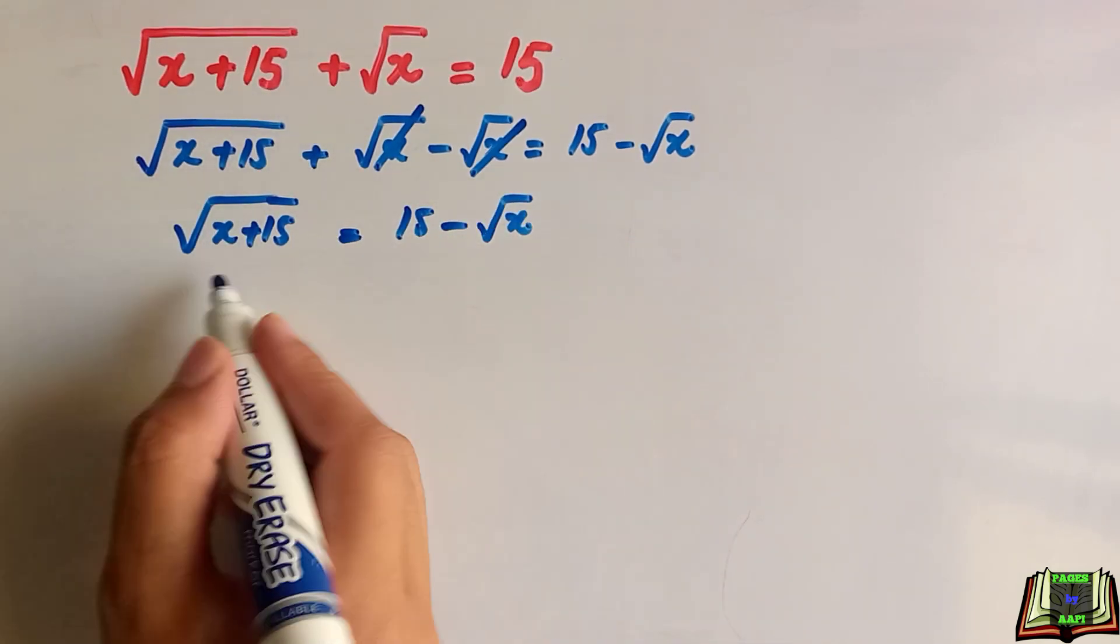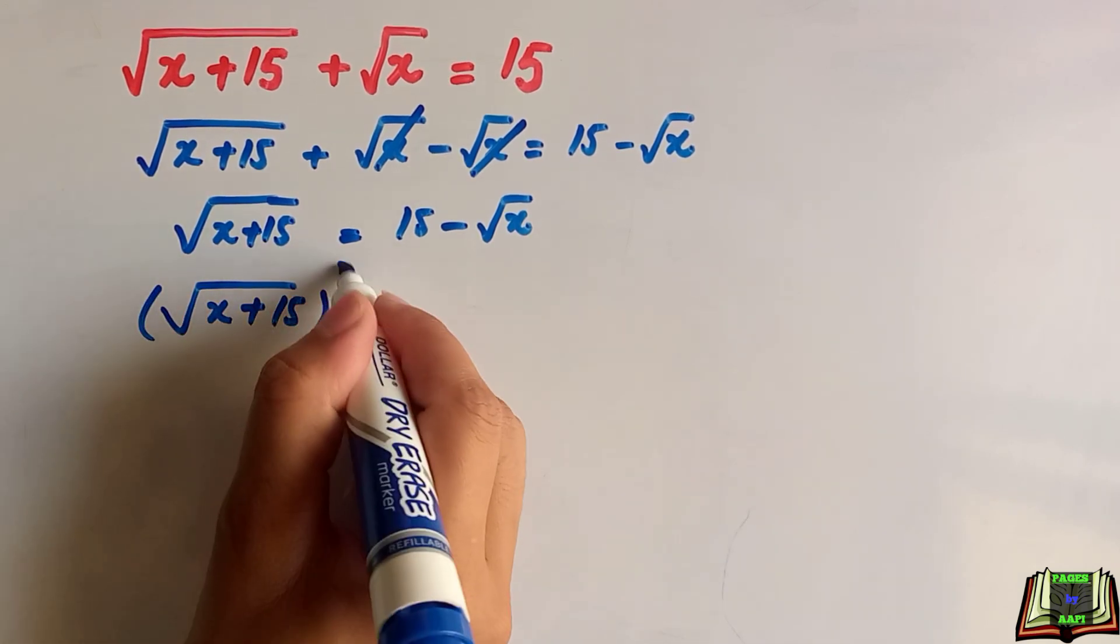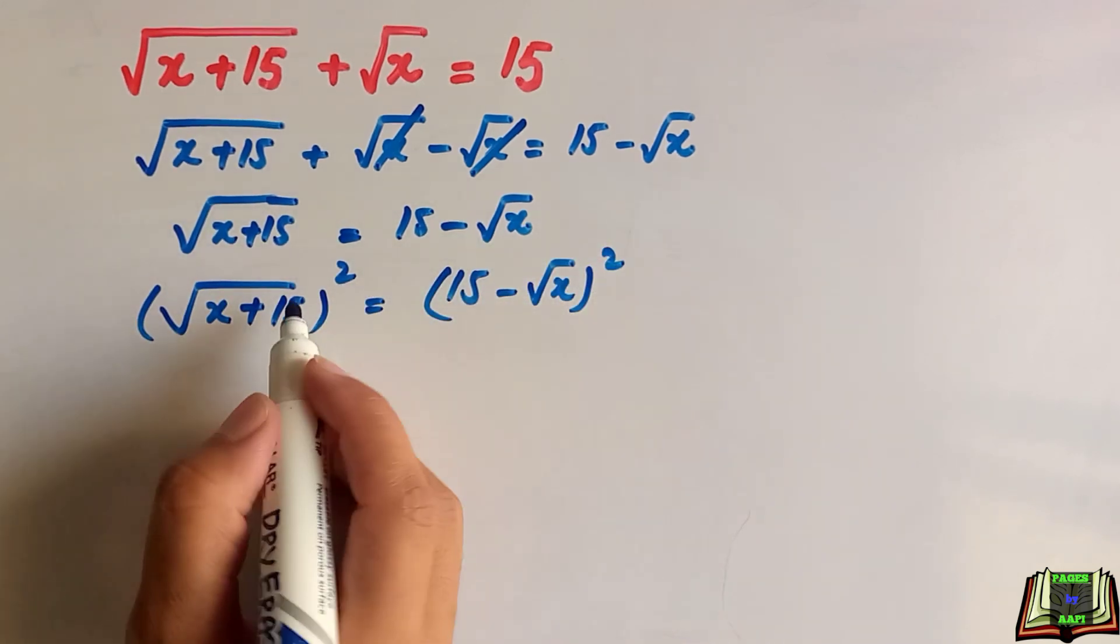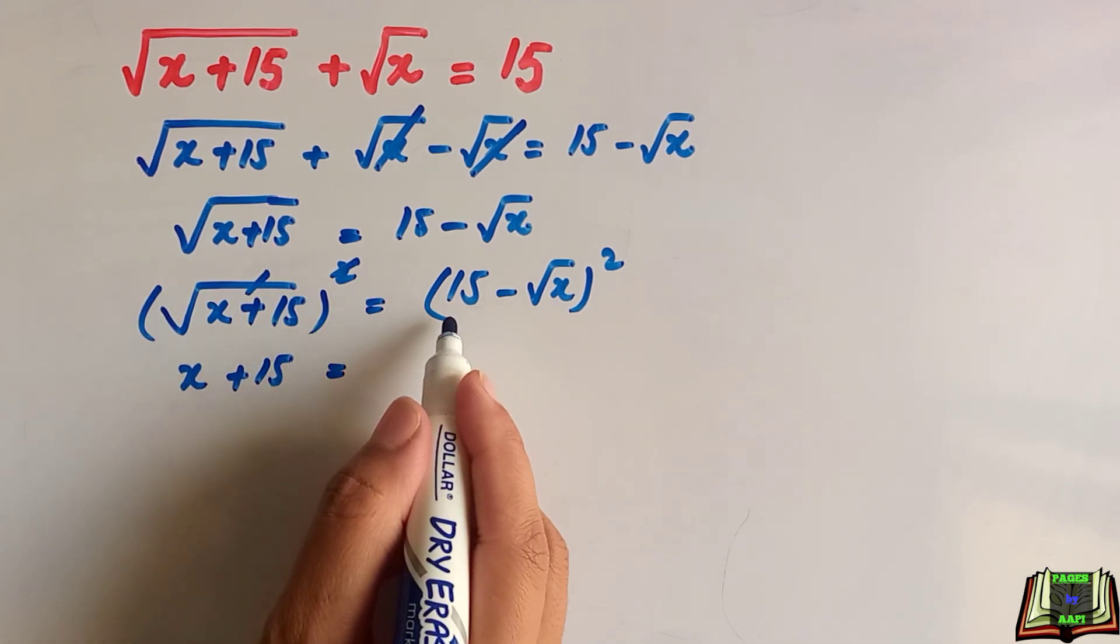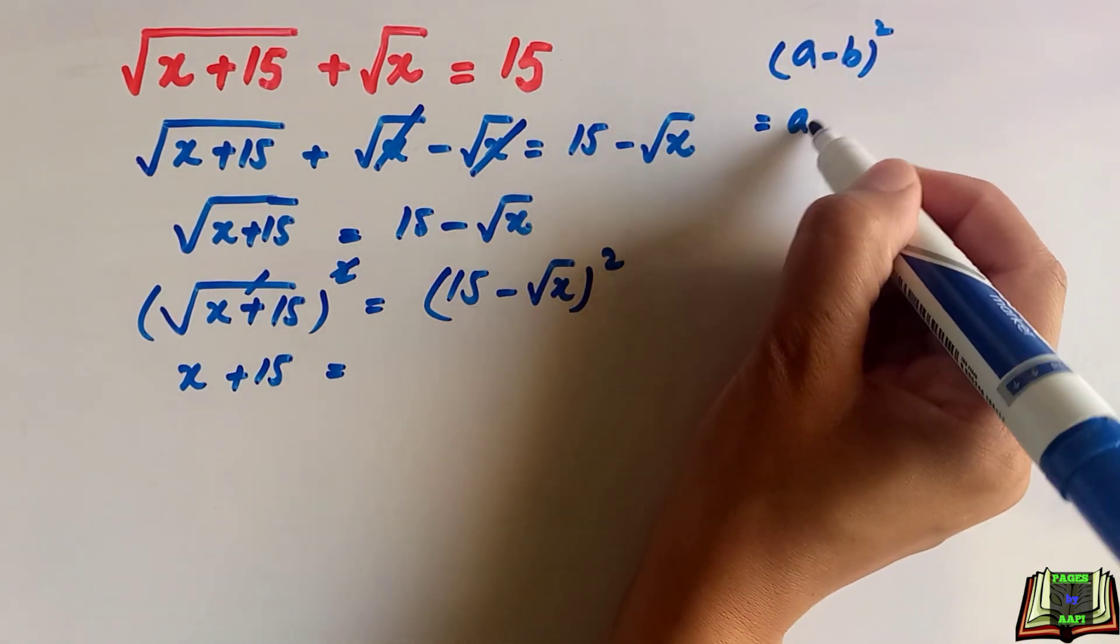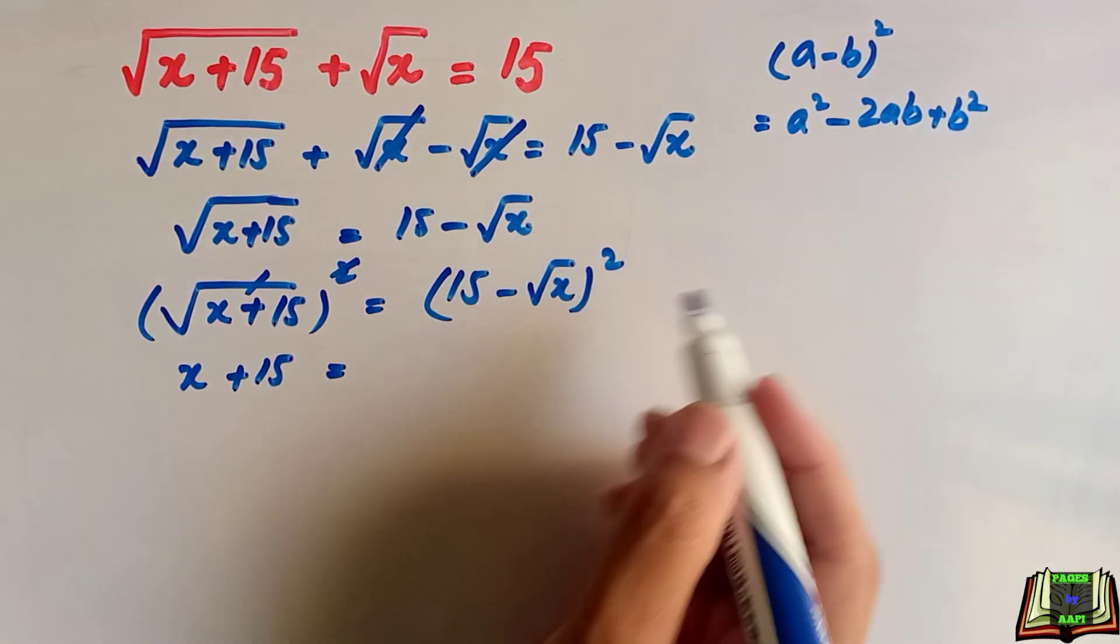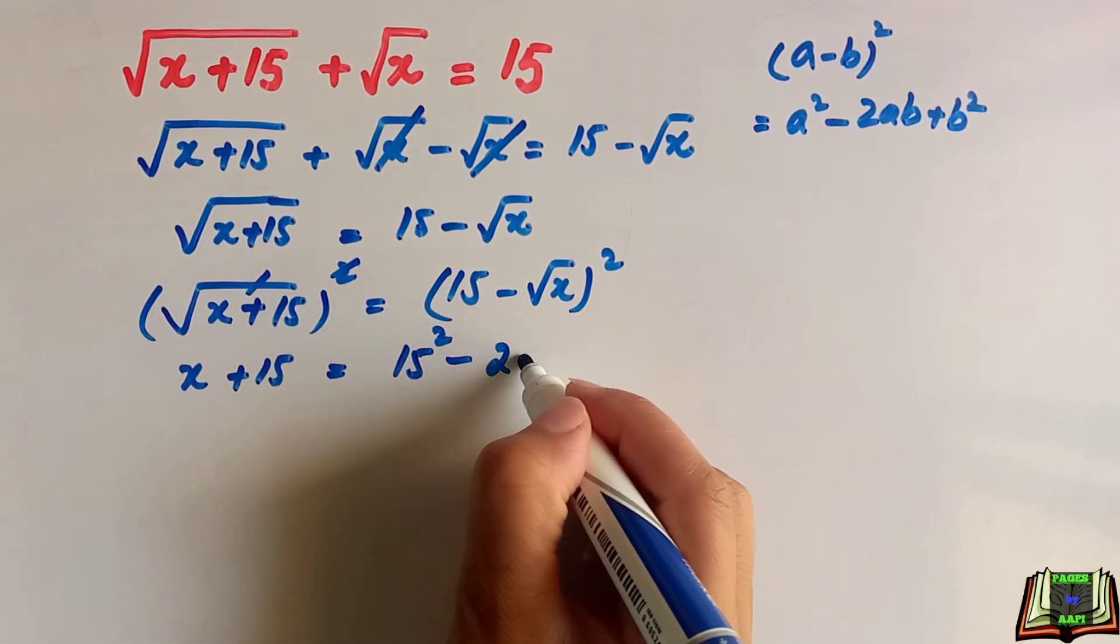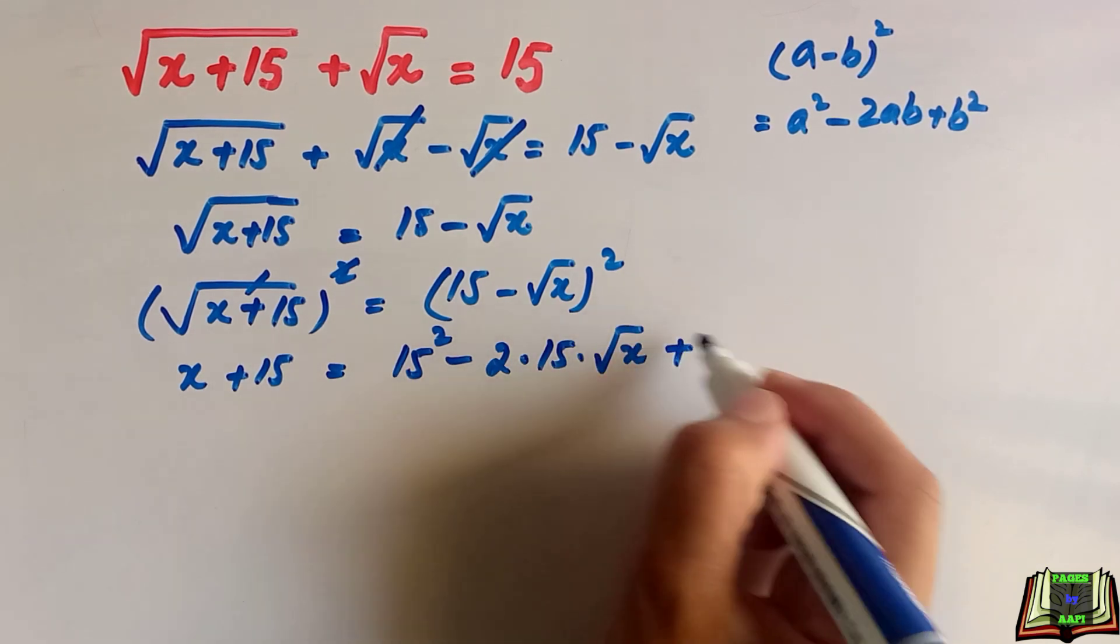At this step we will take the square of this equation on both sides. This square and root cancel out. x plus 15 is equal to, this is an identity, a minus b whole square that is equal to a square minus 2ab plus b square. a square means 15 square minus 2 times 15 times square root of x plus square root of x whole square.